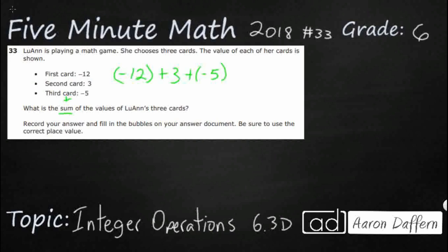We need to figure out what that equals, and that's going to go in the free response bubbles. You'll notice I put parentheses around negative 5 because if not, it would look kind of weird to say plus minus 5. You always use parentheses to separate the two signs so they don't get mixed up.